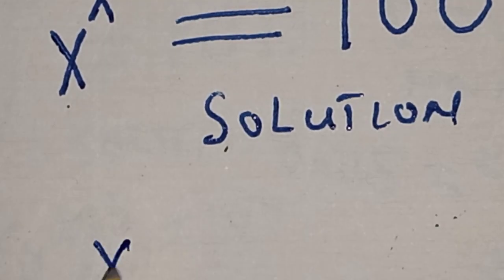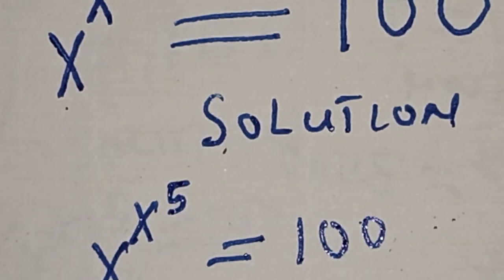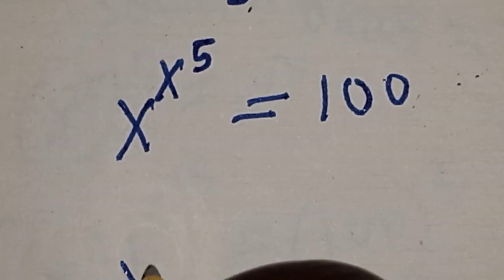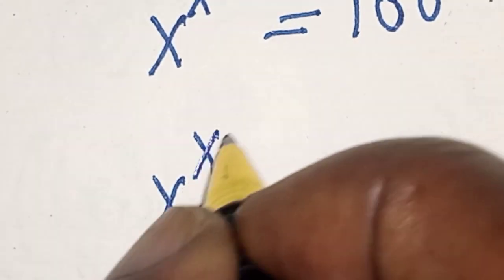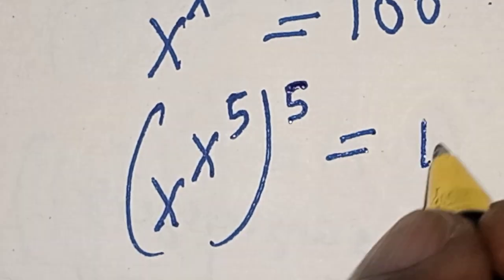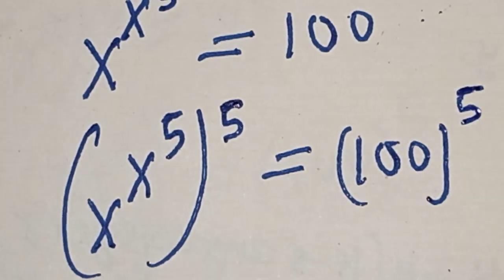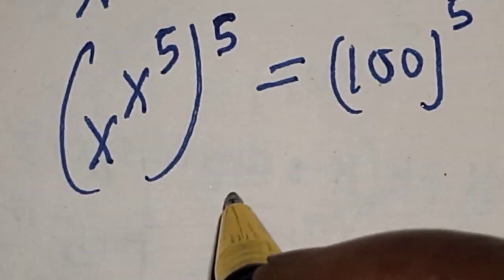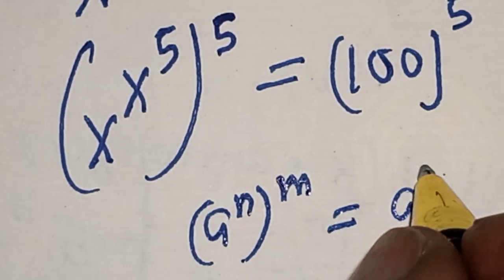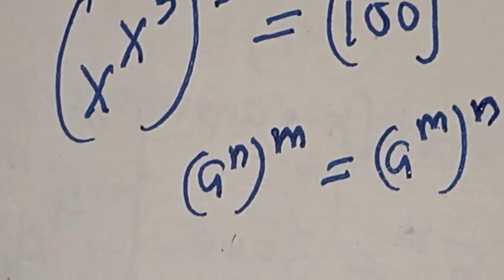We have s raised to power s raised to power 5 is equal to 100. Let's take both sides to the power of 5, giving us s raised to power s raised to power 5, multiplied by 5, is equal to 100 raised to the power of 5. Now, recall the rule: a raised to power n raised to power m equals a raised to power m raised to power n. Let's apply this rule.